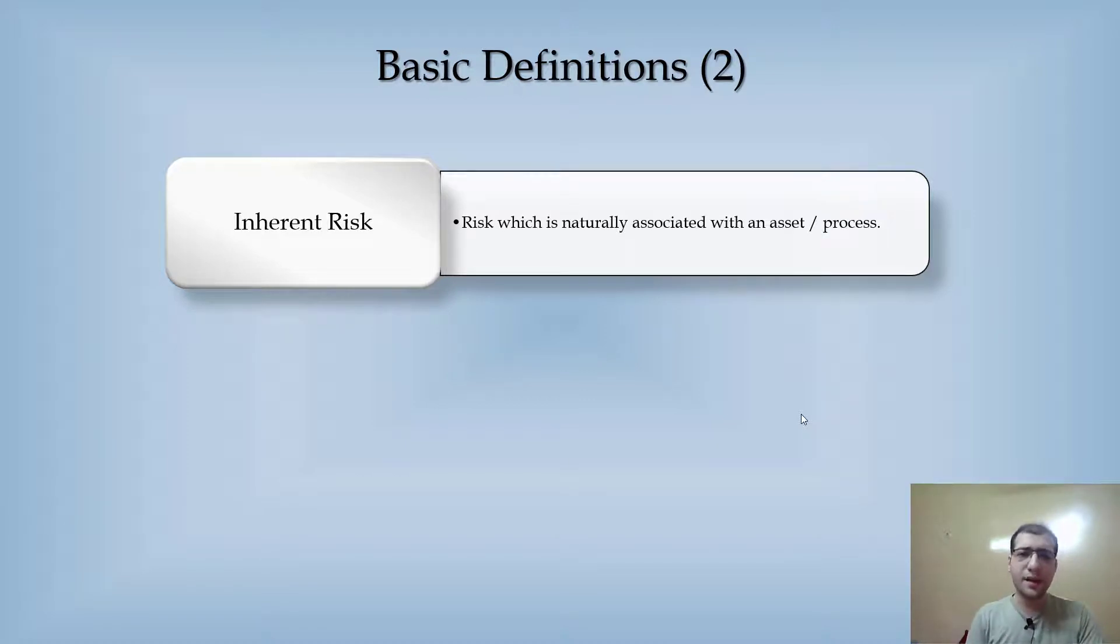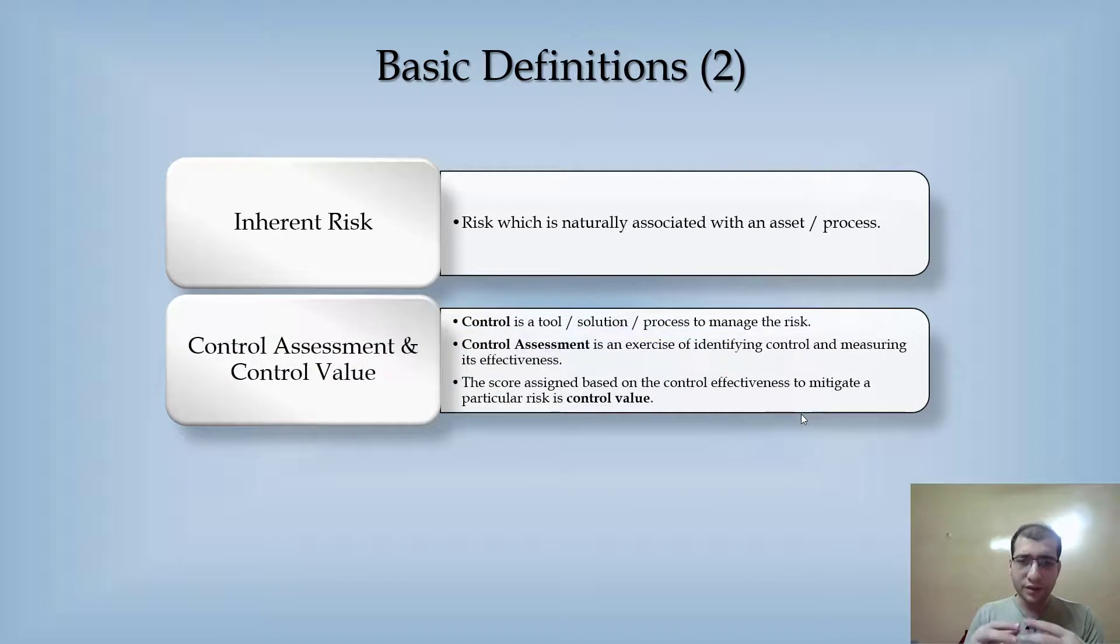Control assessment and value: basically, in order to address any risk, you apply a control to it. It could be any tool, solution, or process to manage it. Once you have applied a control on risk, you assess its effectiveness—how effective this particular control is behaving against this risk.